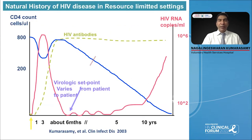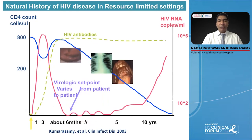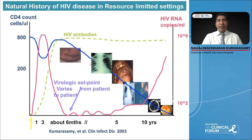Before we start any antiretroviral therapy, as a clinician, we need to know that for patients with HIV, because of the drop in the CD4 cell count, they can acquire various opportunistic infections like herpes zoster, tuberculosis, oropharyngeal candidiasis when the CD4 is less than 200. They can also develop pneumocystis pneumonia, CNS toxoplasmosis, tuberculosis meningitis, cytomegaloviral retinitis, and toxoplasmosis, which are very common when the CD4 is less than 100, and also cryptococcal meningitis.